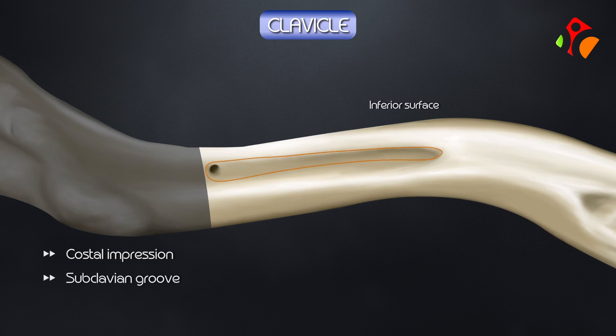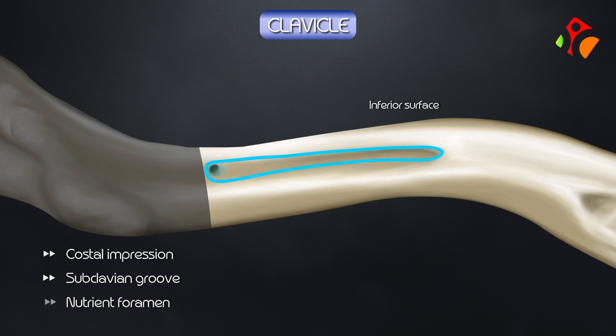The clavipectoral fascia is attached to the margins of the subclavian groove. The nutrient foramen is directed laterally and is present on the lateral part of the subclavian groove.